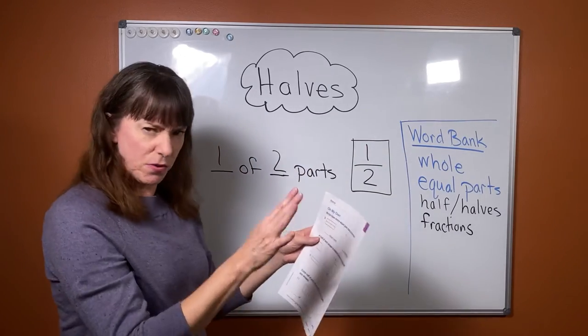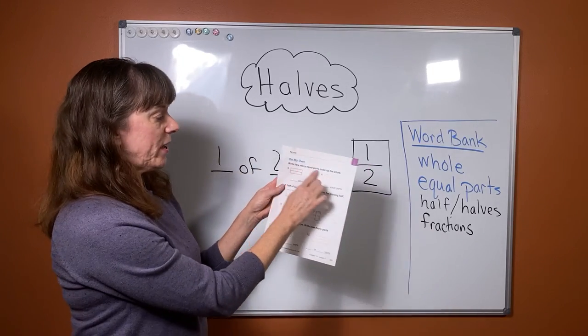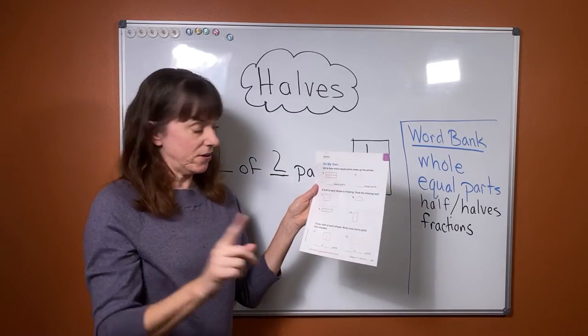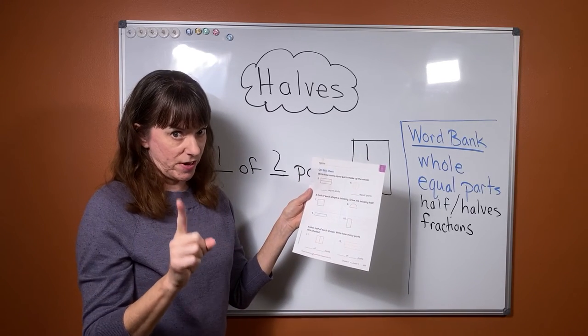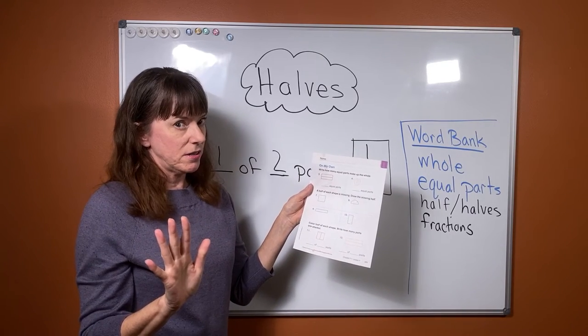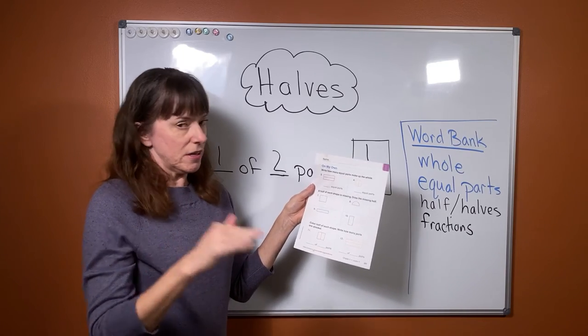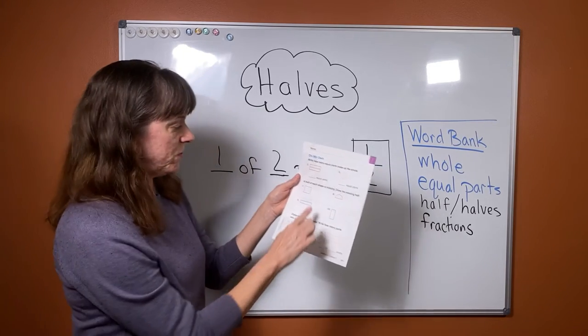The next page, some more that's similar. Write how many equal parts make up the whole. Now here for numbers seven, eight, nine, and ten, read the directions. Every year my kids, my students, my first graders make a mistake on this because they don't read the directions.